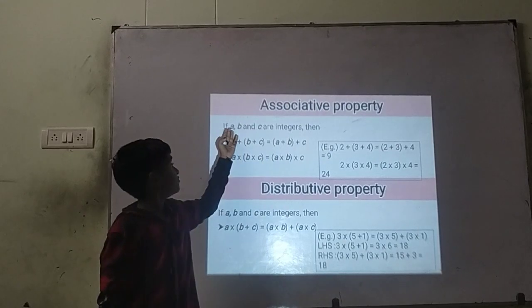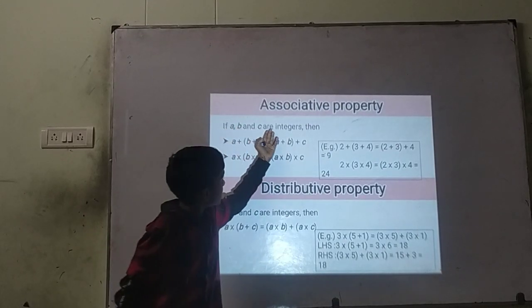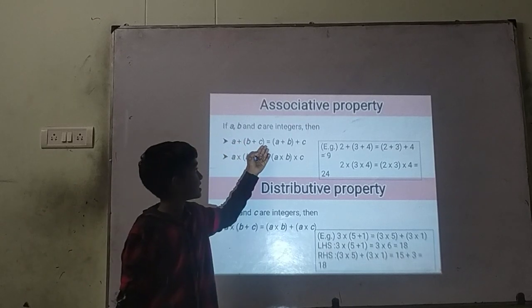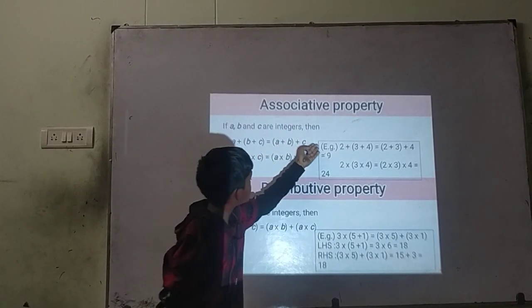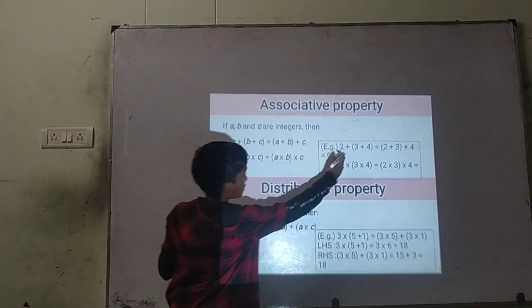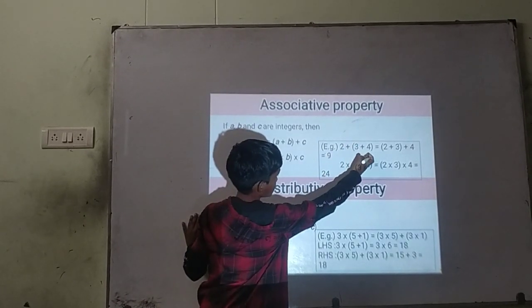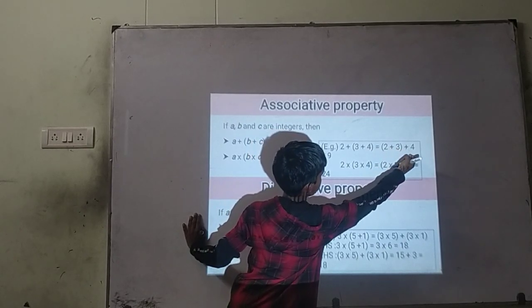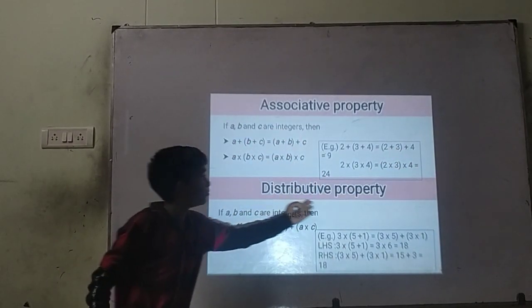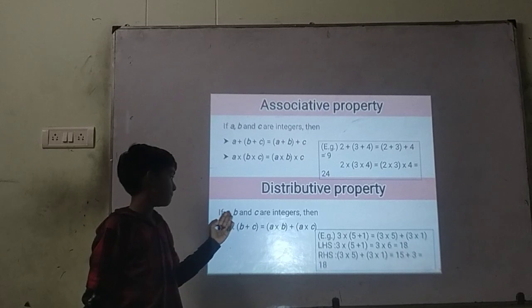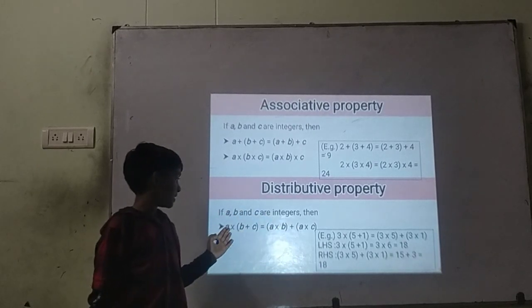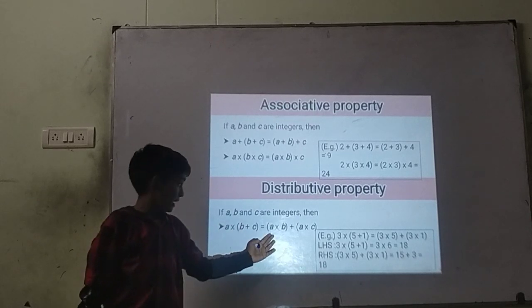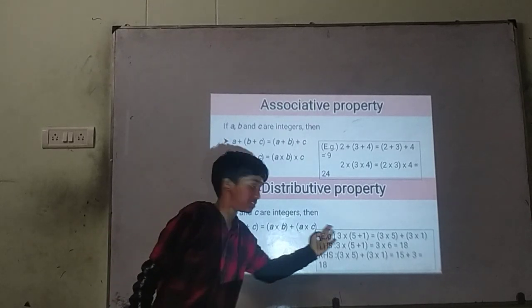Associative property. If A, B, and C are integers, then A plus bracket B plus C is equal to bracket A plus B plus C. For example, 2 plus bracket 3 plus 4 is equal to bracket 2 plus 3 plus 4. Distributive property: A into B plus C is equal to A into B plus A into C.